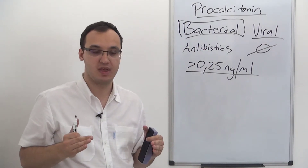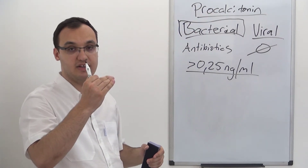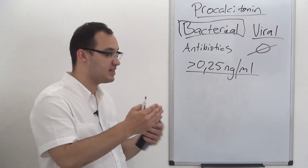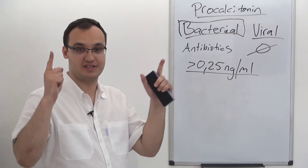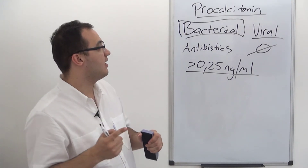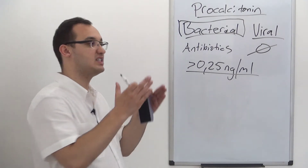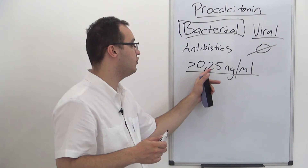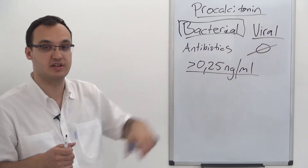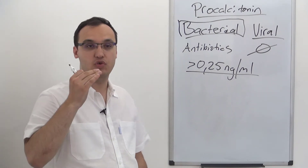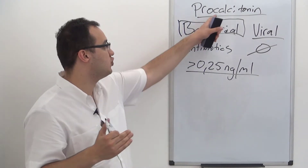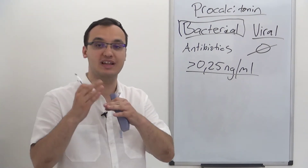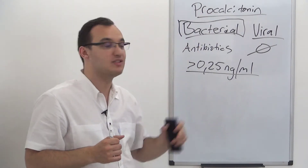But here's a very important point: if procalcitonin is not elevated, you should still give antibiotics — you should still start with empiric therapy. It may seem contradictory, but procalcitonin should not be used by itself. You must use procalcitonin together with the symptoms, the chest X-ray, and the overall clinical picture. Procalcitonin is good, but not as a standalone tool.